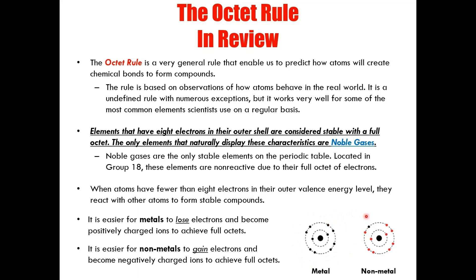Now both of these atoms are fully stable because both have full octets. It's important to keep in mind that because this metal has lost one electron, and electrons are negative, it is now overall positive. And because this non-metal has gained one electron, which is negative, this non-metal now has an overall negative charge. We've created two ions — a positive ion and a negative ion. The positive charge of this metal and the negative charge of this non-metal will attract each other, forming a new ionic compound. In fact, the compound formed here is sodium fluoride.